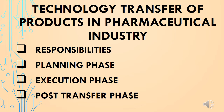Welcome to PharmGo. In this presentation we will see the technology transfer of products in the pharmaceutical industry. Here we will see the responsibilities of various key departments such as technology transfer, research and development, production, quality control, and quality assurance in the technology transfer procedure. We will also see the different phases of technology transfer: the planning phase, execution phase, and the post-transfer phase.